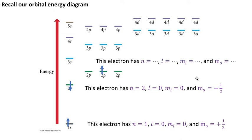How about this one here? And if you want to pause and have a look at it and take a shot at it. All right, I'm saying here we are still in the second shell. So that means n is two. It's a p orbital. So now I know that l is one.